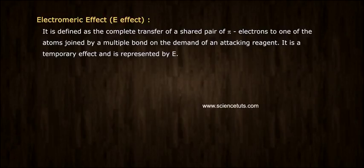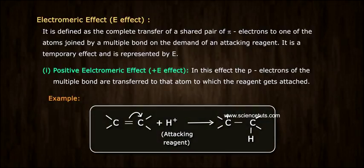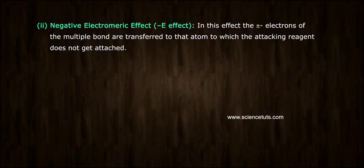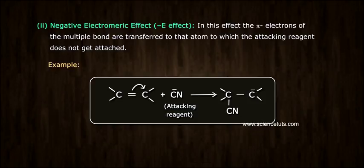Electromeric effect, E effect. It is defined as the complete transfer of a shared pair of pi electrons to one of the atoms joined by a multiple bond on the demand of an attacking reagent. It is a temporary effect and is represented by E. 1. Positive electromeric effect, positive E effect. In this effect, the pi electrons of the multiple bond are transferred to that atom to which the reagent gets attached. 2. Negative E effect. The pi electrons of the multiple bond are transferred to that atom to which the attacking reagent does not get attached.